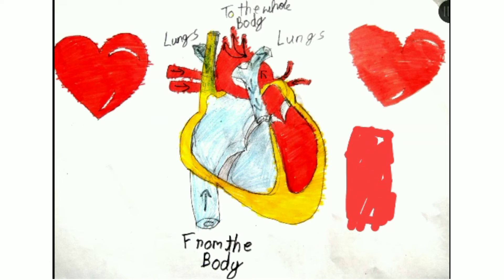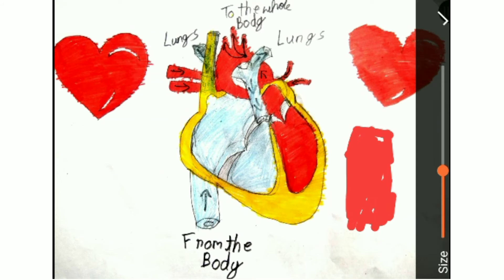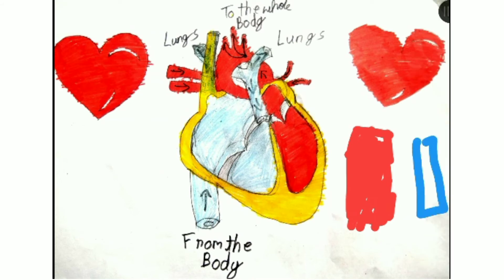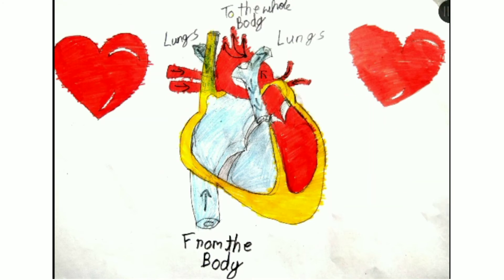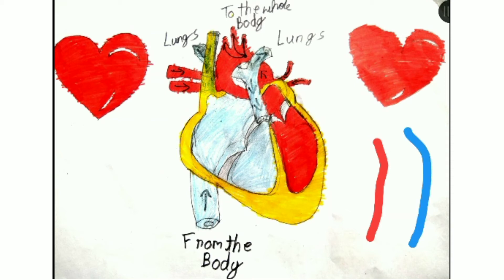This is an artery and this is a vein. Arteries are thicker than veins. Arteries transport rich oxygenated blood to the body, and veins transport deoxygenated blood from the body to the heart.